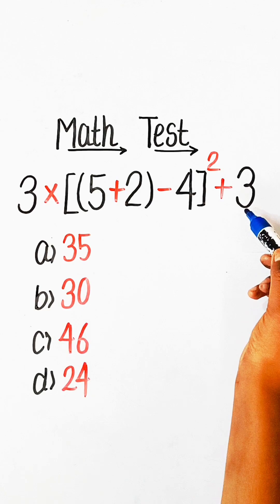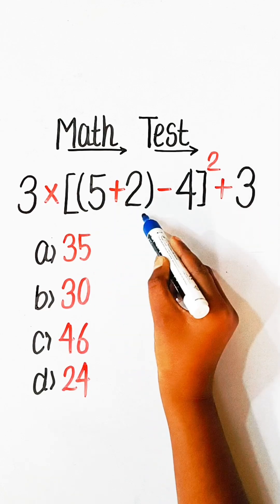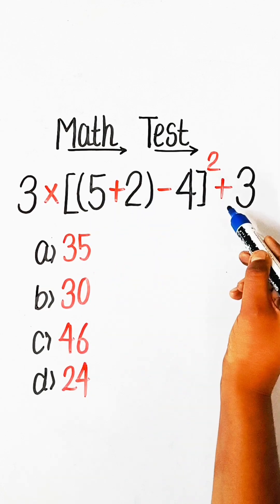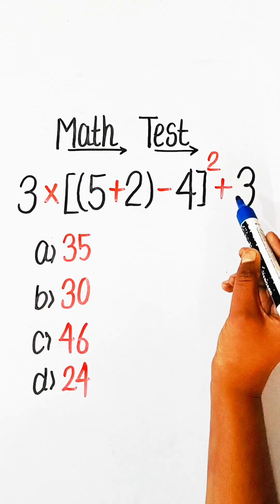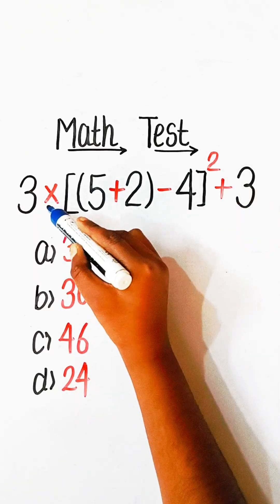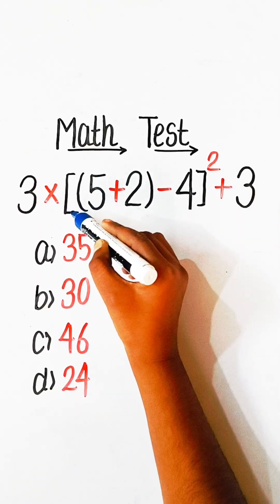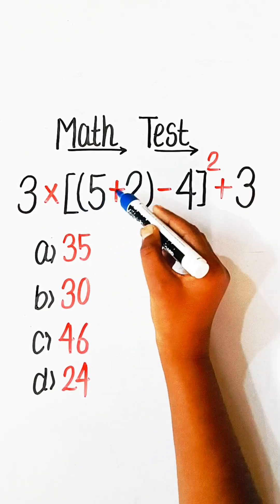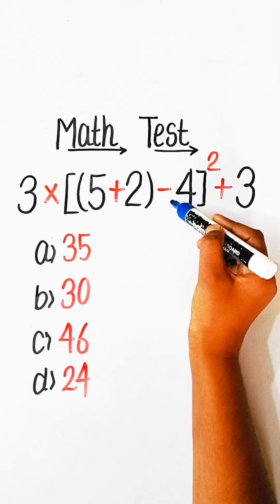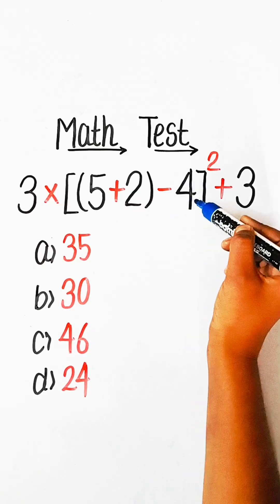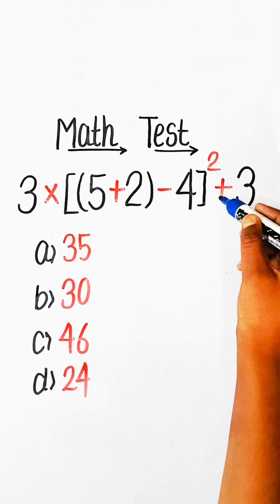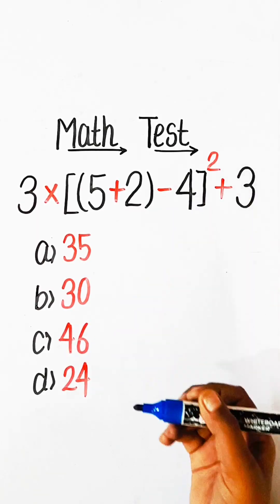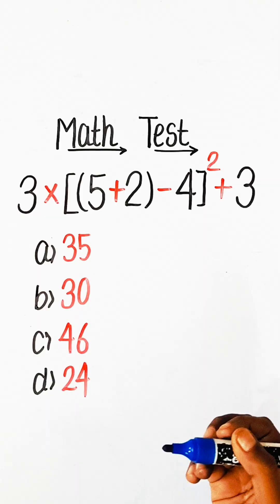Hello everyone. In this video, we will solve this basic math expression: 3 multiplied by, under bracket, 5 plus 2, plus negative 4 squared, plus 3, equals to what?